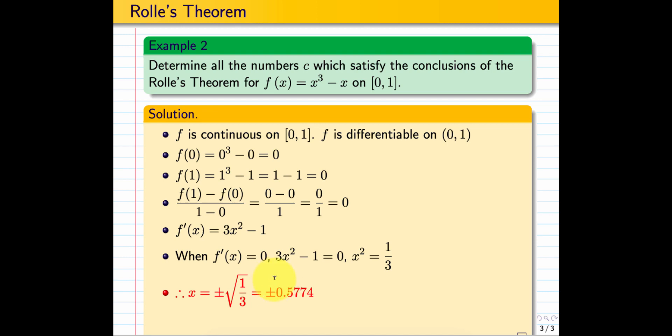The only solution that lies on (0, 1) is plus 0.5774. Hence, the positive solution plus 0.5774 lies between 0 and 1. Thank you.